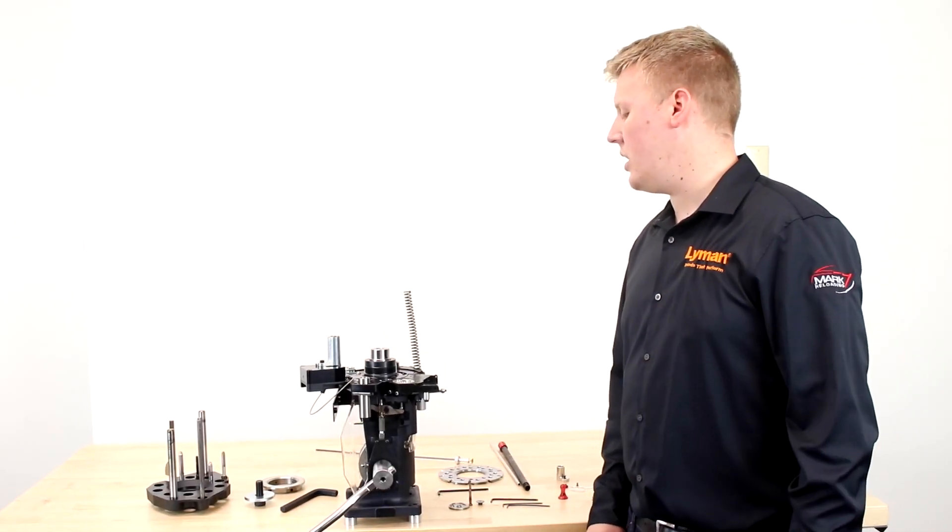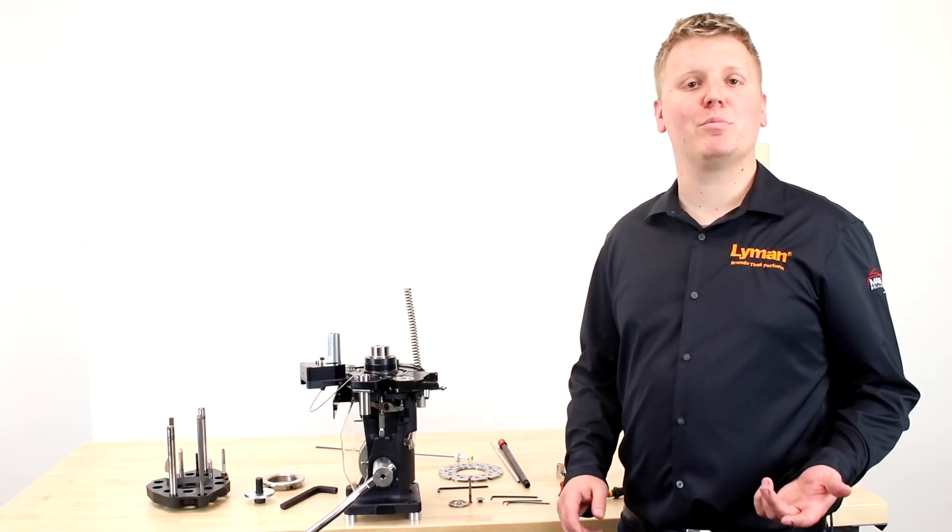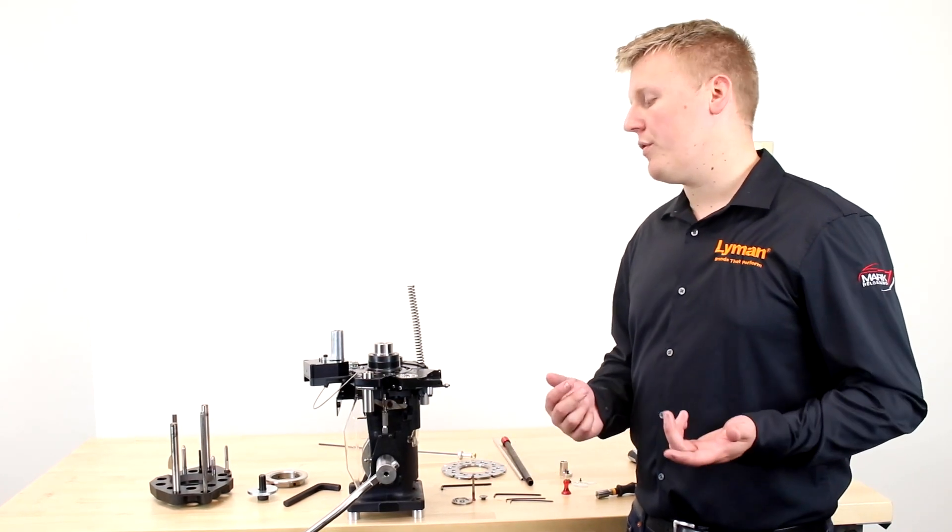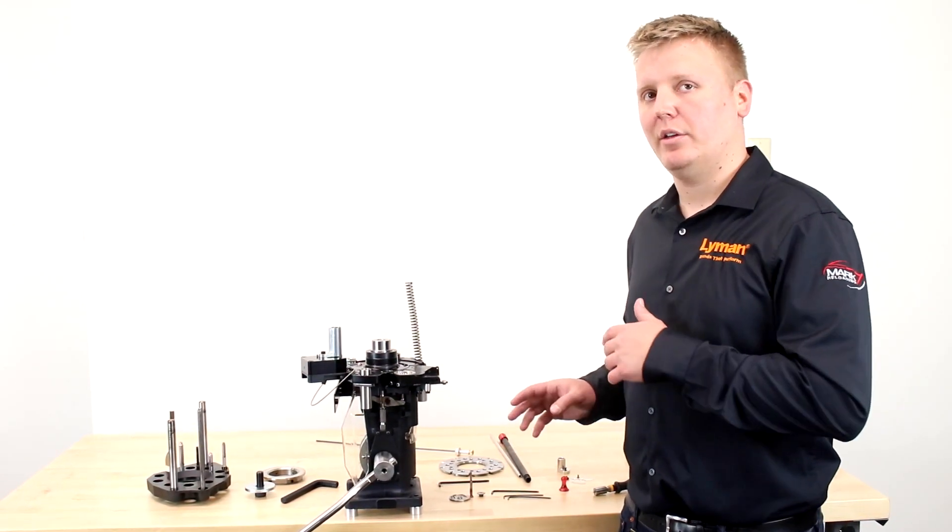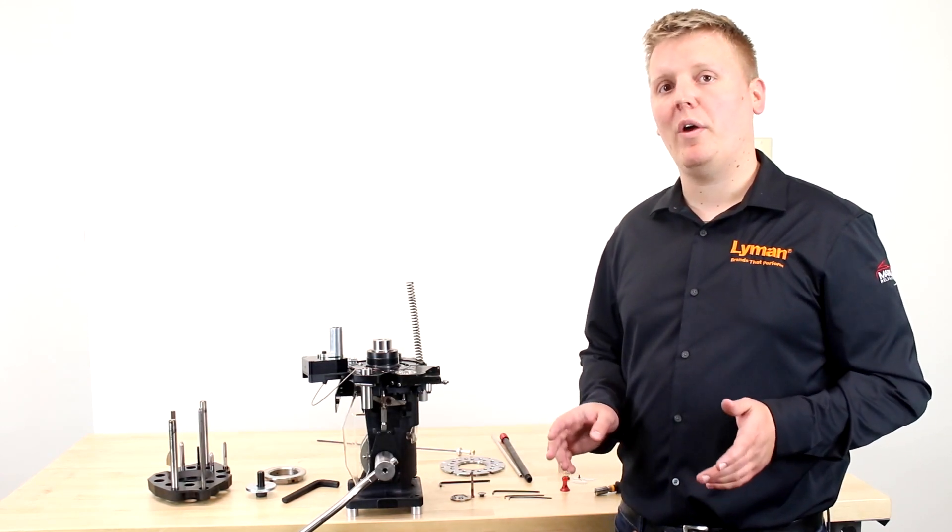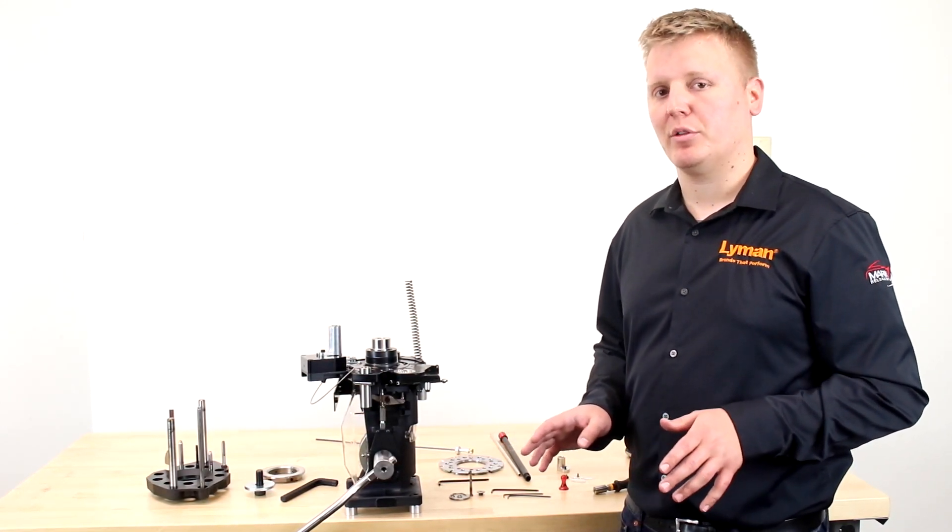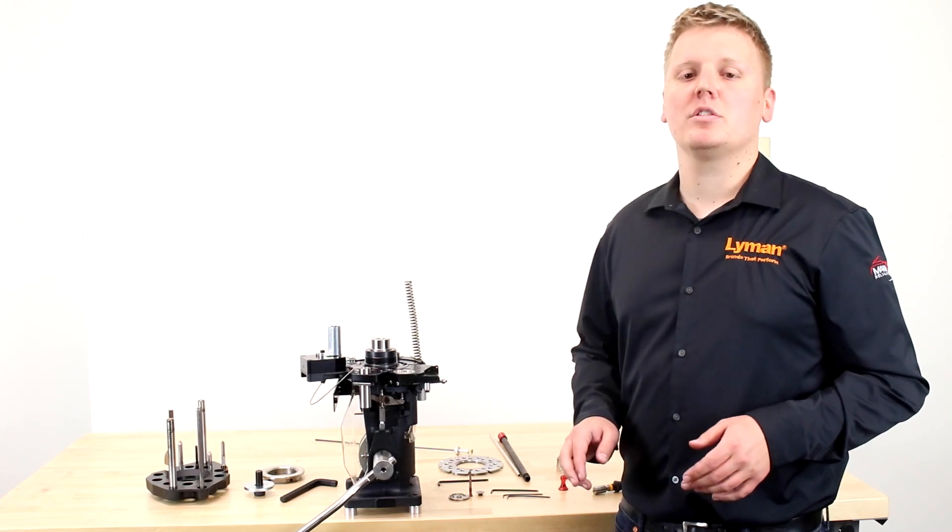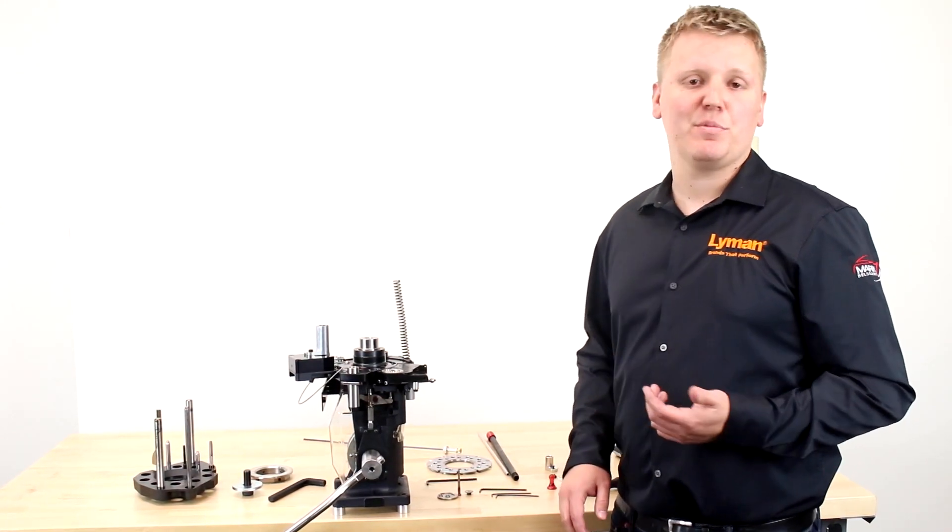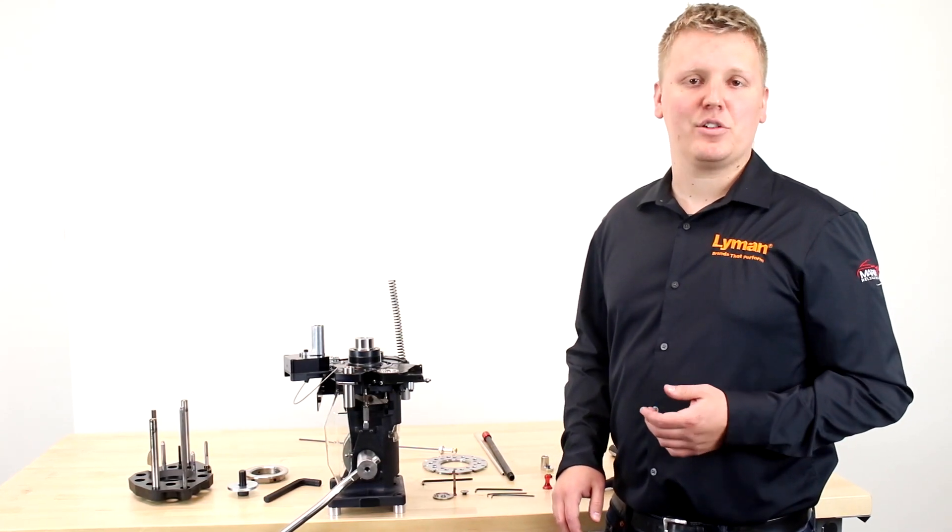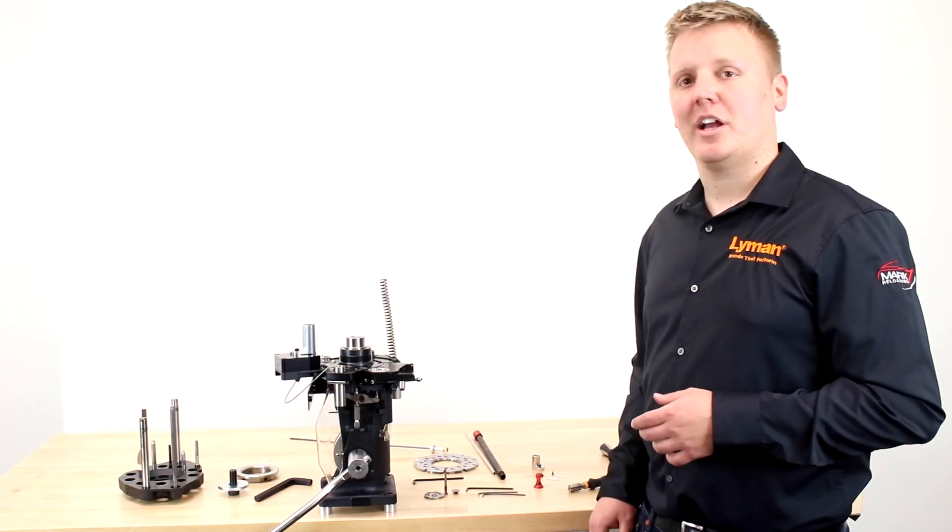Okay guys, that's everything you need to do to swap over your primer components from large to small or vice versa. Like I also said before, every part that I used to do the swap over was included with the Apex 10—there's no extra parts to buy. If you have any other questions, please call us 1-800-4-MARK7 or email us at support@markvii-loading.com. Thank you guys, catch you next time.